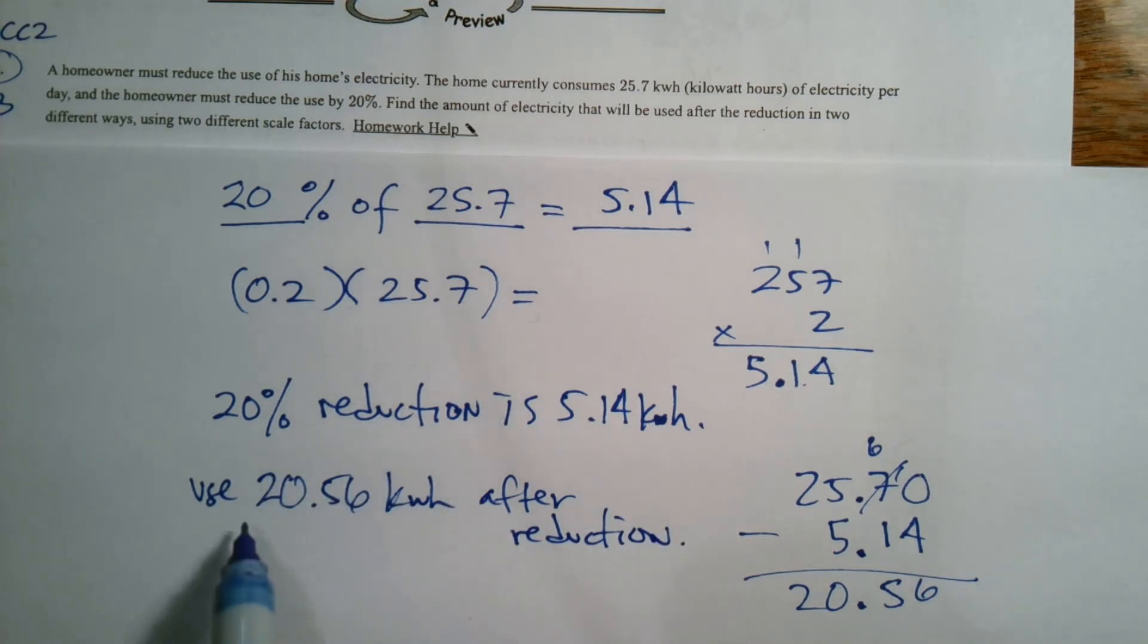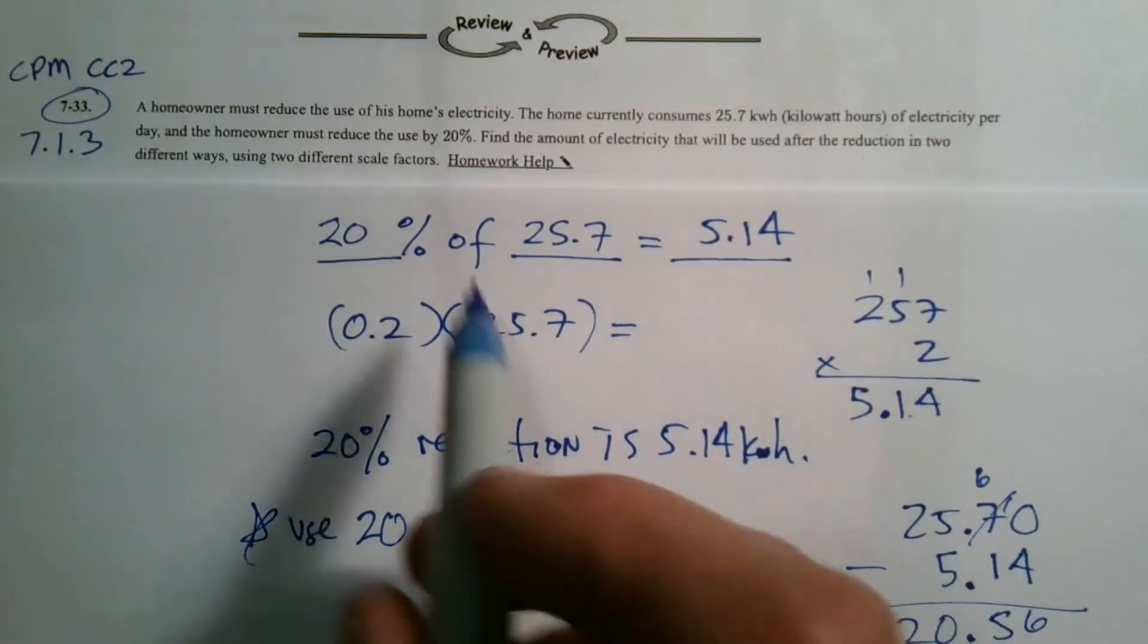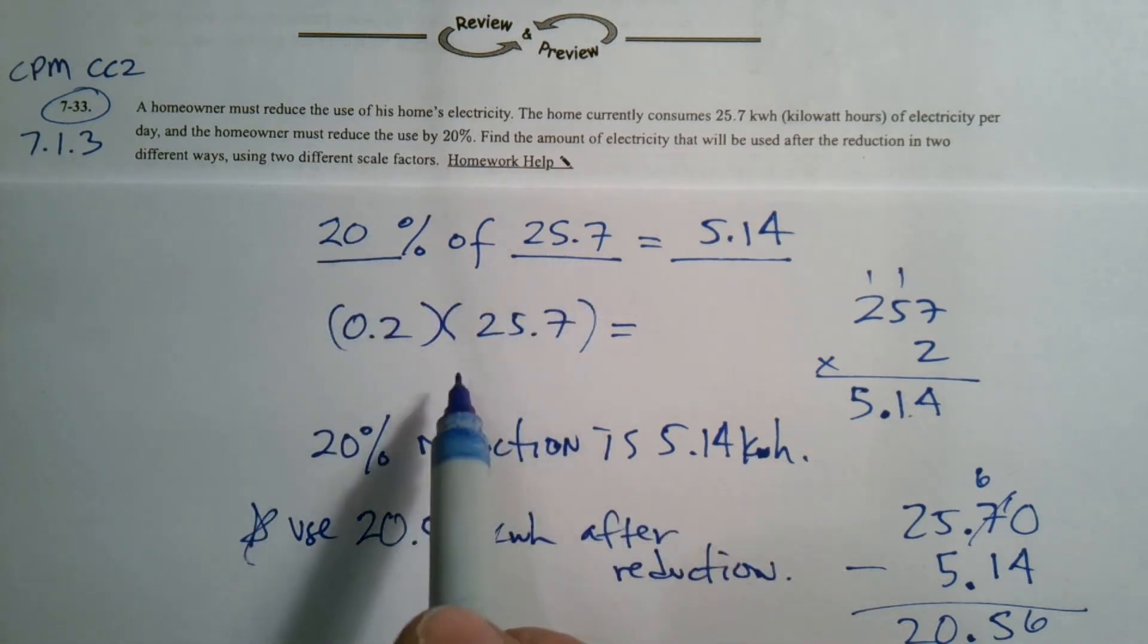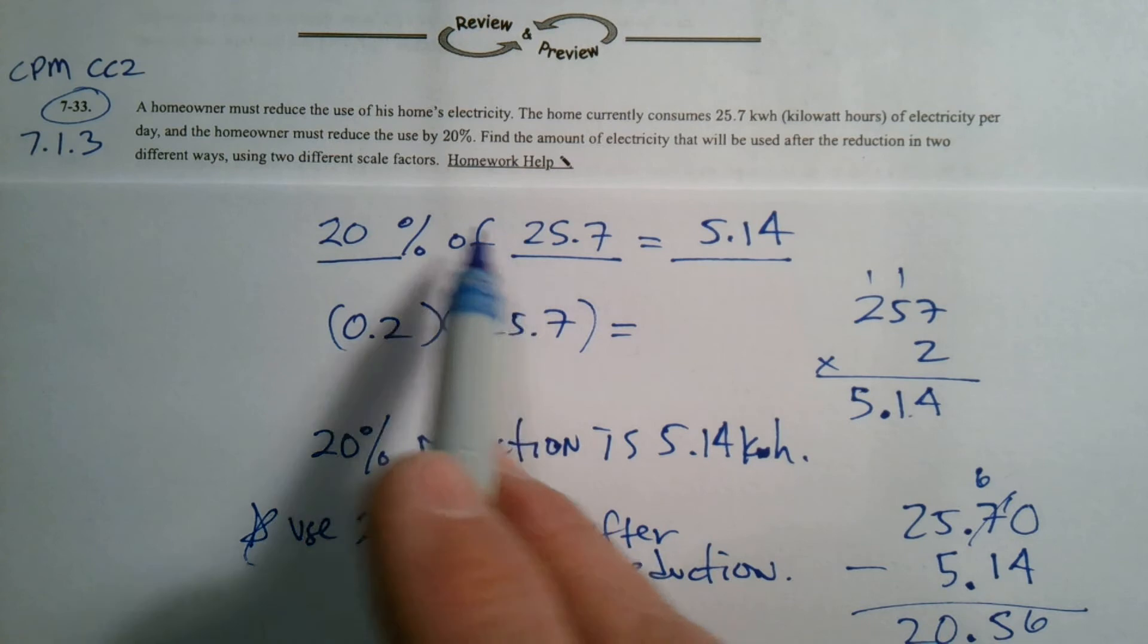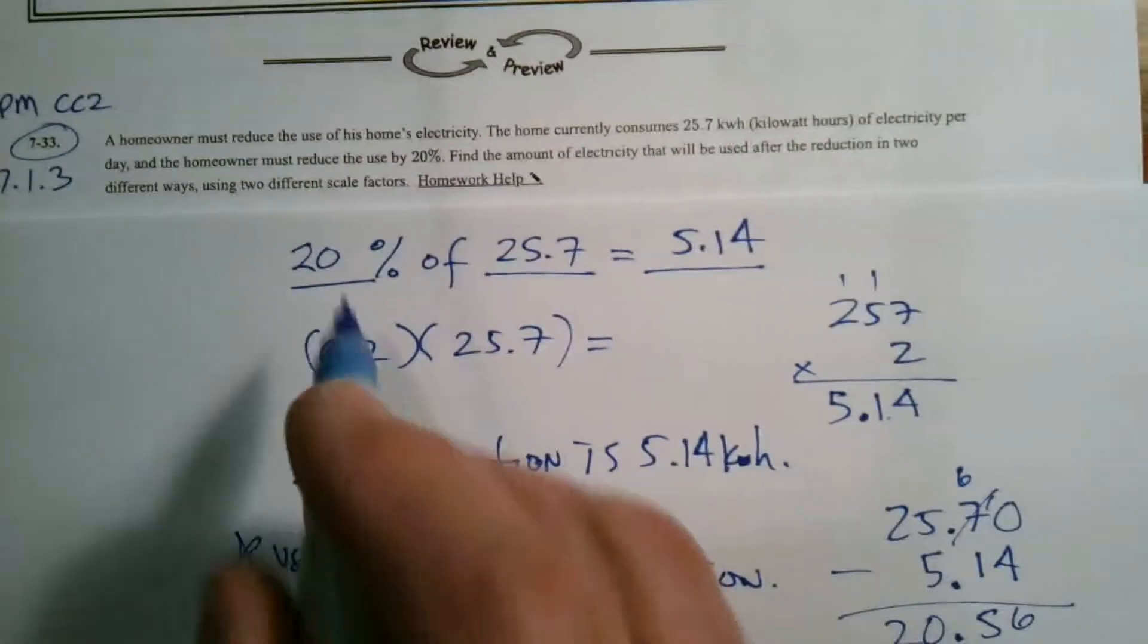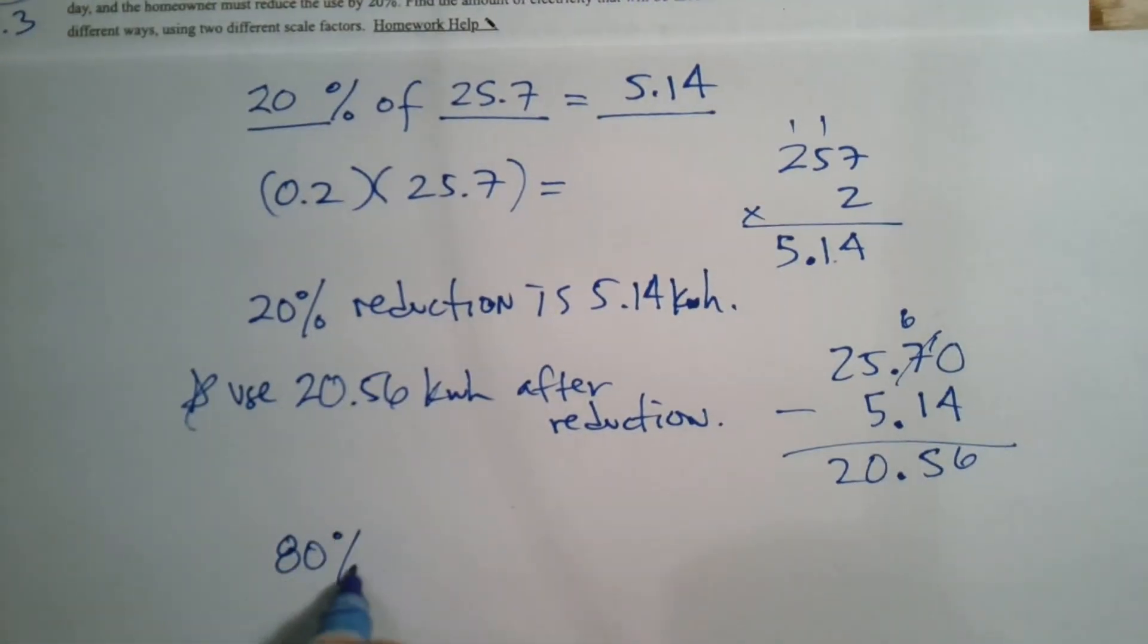It wanted me to, so that was one way of finding it. So this is the answer, but it's one way of finding it. First, finding out what is the reduction and then subtracting that from the total. What would be another way? Because it said to find it two different ways. Another way is, if you know 20% is the reduction, then what percentage would be what you need to be used? If that's 20%, the other way would be to take 80% of 25.7.